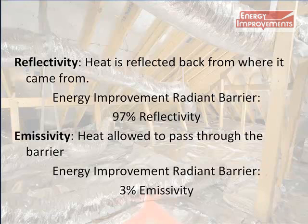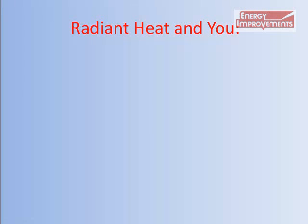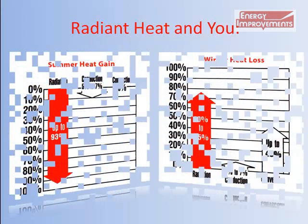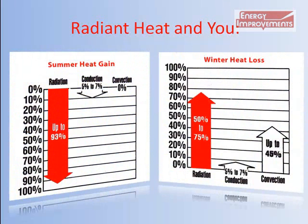What does radiant heat mean to you? In the summer, up to 93% of heat gain is radiant heat. Remember, even the Department of Energy acknowledges that traditional insulation doesn't stop radiant heat transfer — it can only stop convection and conduction. This means your air conditioner has to run longer in order to cool the excessive heat entering your home.